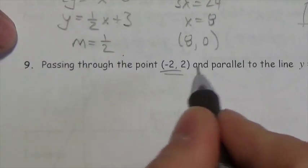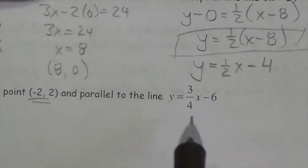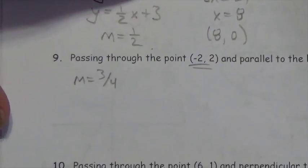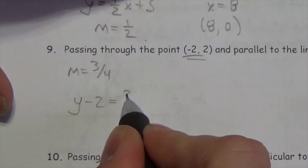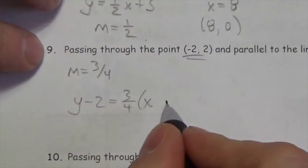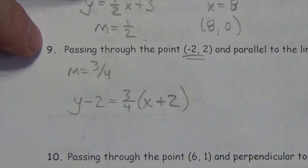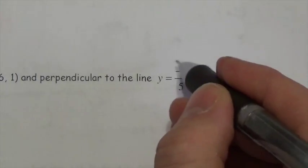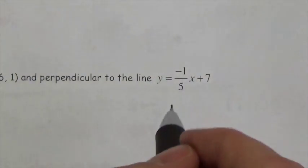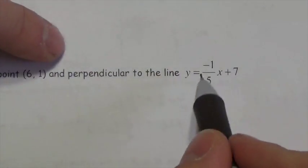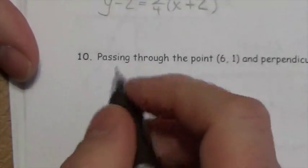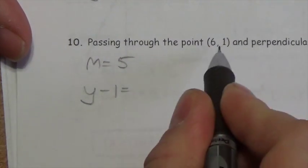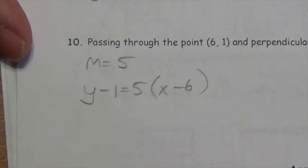Passing through (negative 2, 2) and parallel to a line with slope 3/4: parallel means same slope, so slope is 3/4. The equation is y minus 2 equals 3/4 times (x minus negative 2), which is y minus 2 equals 3/4 times (x plus 2). Finally, passing through (6, 0) and perpendicular to y equals negative 1/5 x plus 7: the slope of that line is negative 1/5, so the perpendicular slope is positive 5. The equation is y minus 0 equals 5 times (x minus 6), giving y minus 0 equals 5(x minus 6).